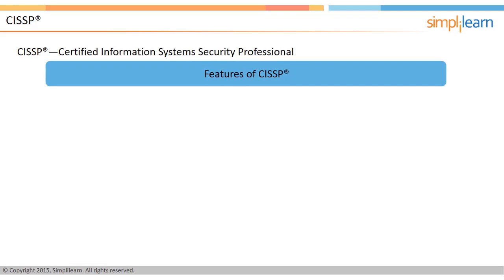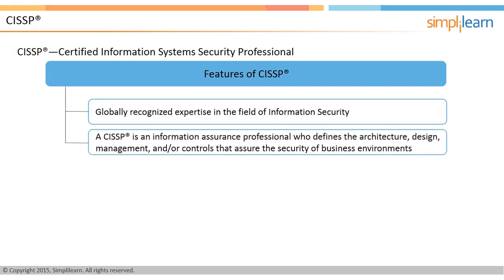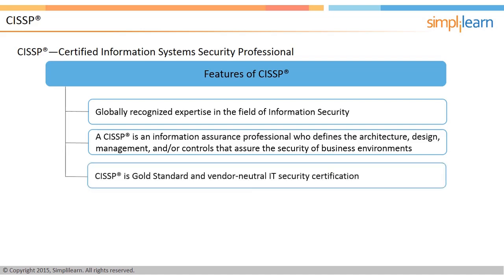CISSP is the first certification in information security which is globally recognized. The CISSP is an information assurance professional who has demonstrated a globally recognized level of competence provided by a common body of knowledge that defines the architecture, design, management, risk, and controls that assure the security of business environments. The CISSP is a gold standard and vendor-neutral IT security certification.